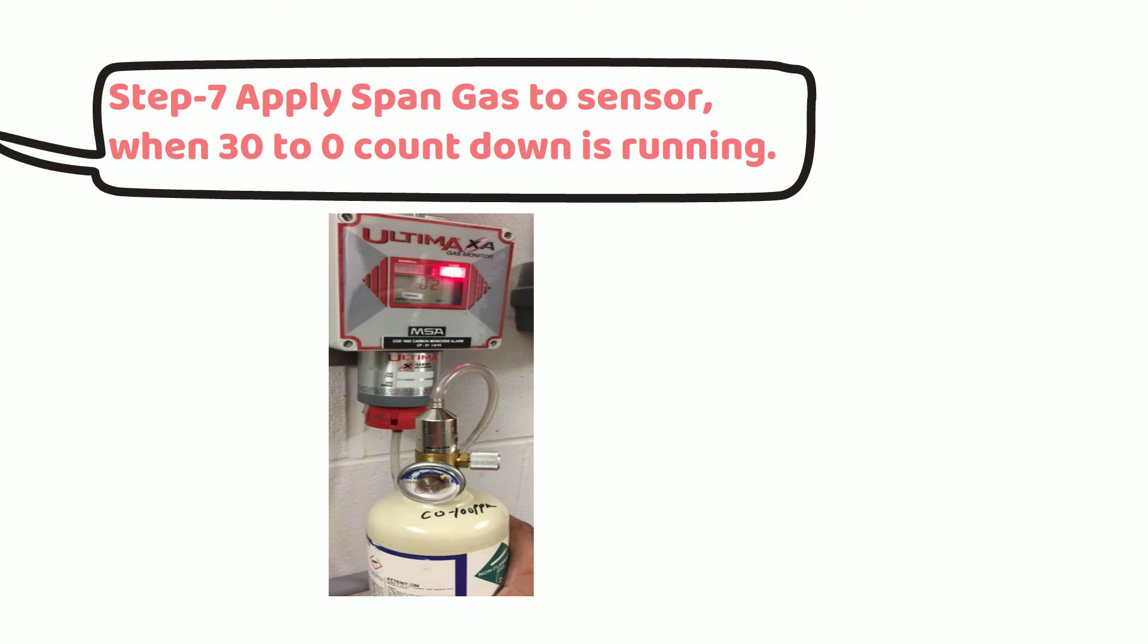For example, if span is set for 100 parts per million of carbon monoxide, then you have to apply 100 parts per million gas to sensor.